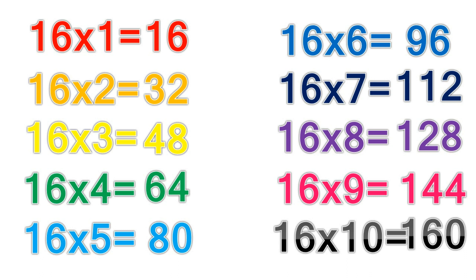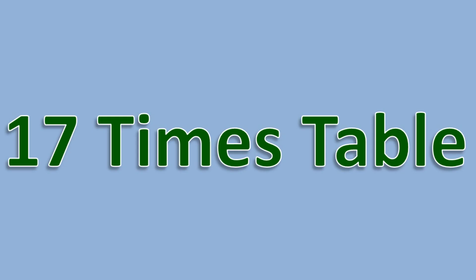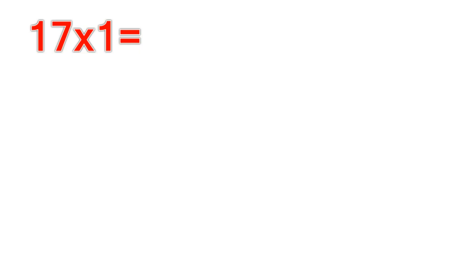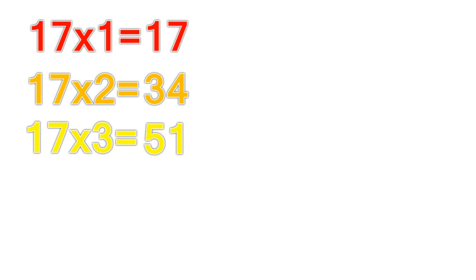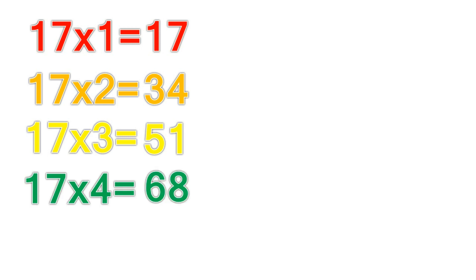17 times table. 17 times 1 equals 17. 17 times 2 equals 34. 17 times 3 equals 51. 17 times 4 equals 68.